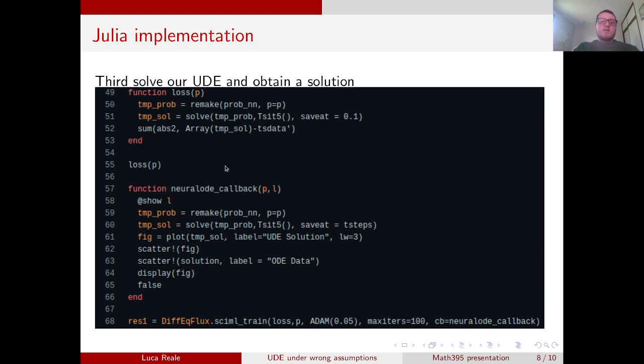Now, here we train the neural network. To do that, I used the DiffEqFlux package, and I used sciml_train. We calculated the loss function, which is just the sum of the absolute difference between our estimated solution and the generated solution. We then used the neural ODE callback, which simply iterates through this process and trains our neural network. As our optimizer, we used Adam, and we did this process for 100 iterations.